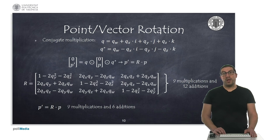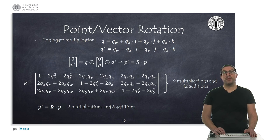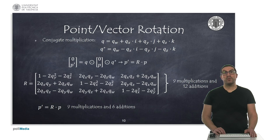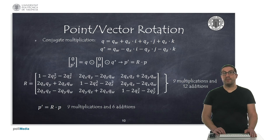Formally, the quaternion of a point should be normalized and then we should undo the operation. However, this is not strictly necessary since this operation is usually implemented by converting the quaternion into a rotation matrix using the expression shown here. This is one of the most efficient ways to perform the point rotation operation. The expression can be derived from the quaternion multiplication operator and its conjugate by factoring the elements of the point. The conversion from quaternion to rotation matrix has a cost of 9 multiplications and 12 additions, while the point rotation has a cost of 9 multiplications and 6 additions.